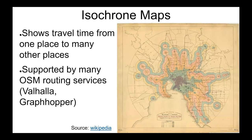Once we have all the hospitals, how can we find the driving times? I used a tool called an isochrone map. These maps are used to show the travel times between one place and many other places. This figure shows an isochrone map of Melbourne, Australia by train from 1910 — so they go back a ways. There are many OpenStreetMap tools that can generate isochrone maps; in this case I used Valhalla, which is an open source one.